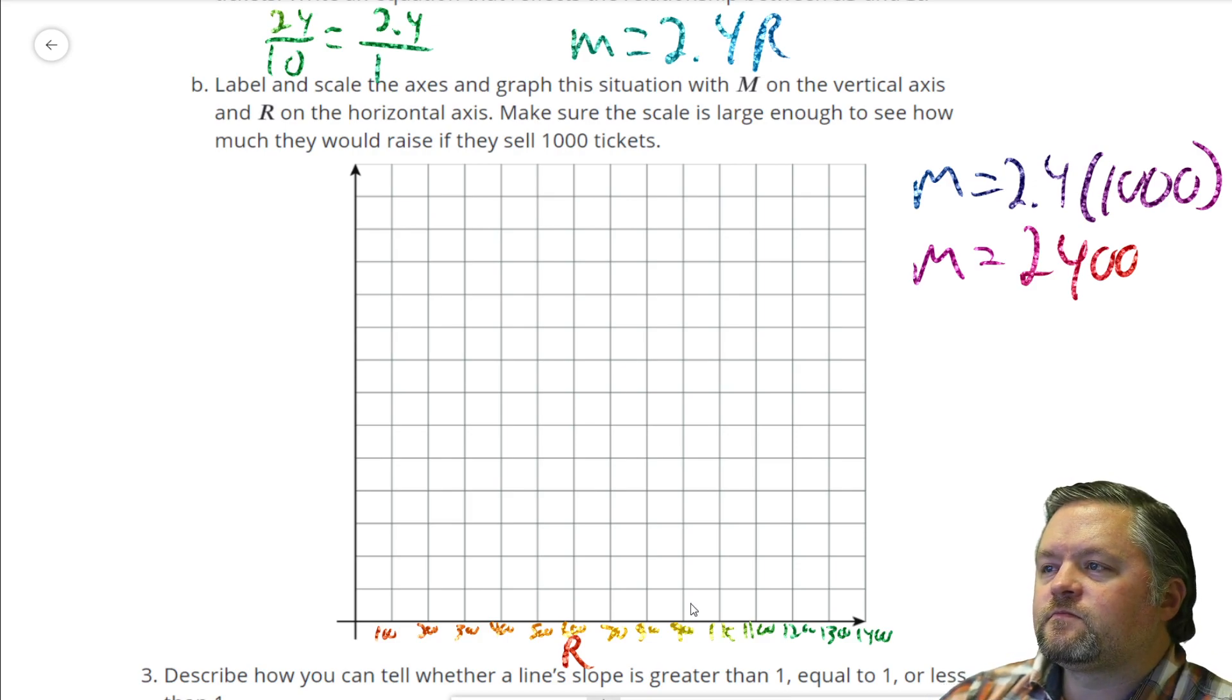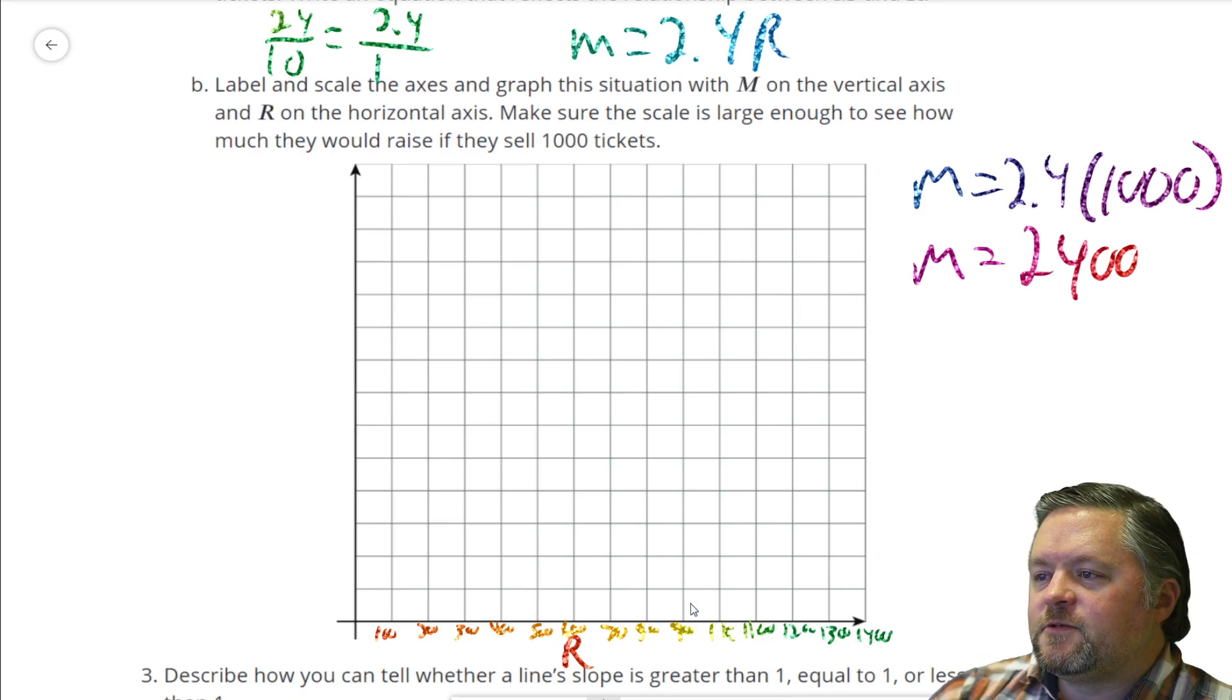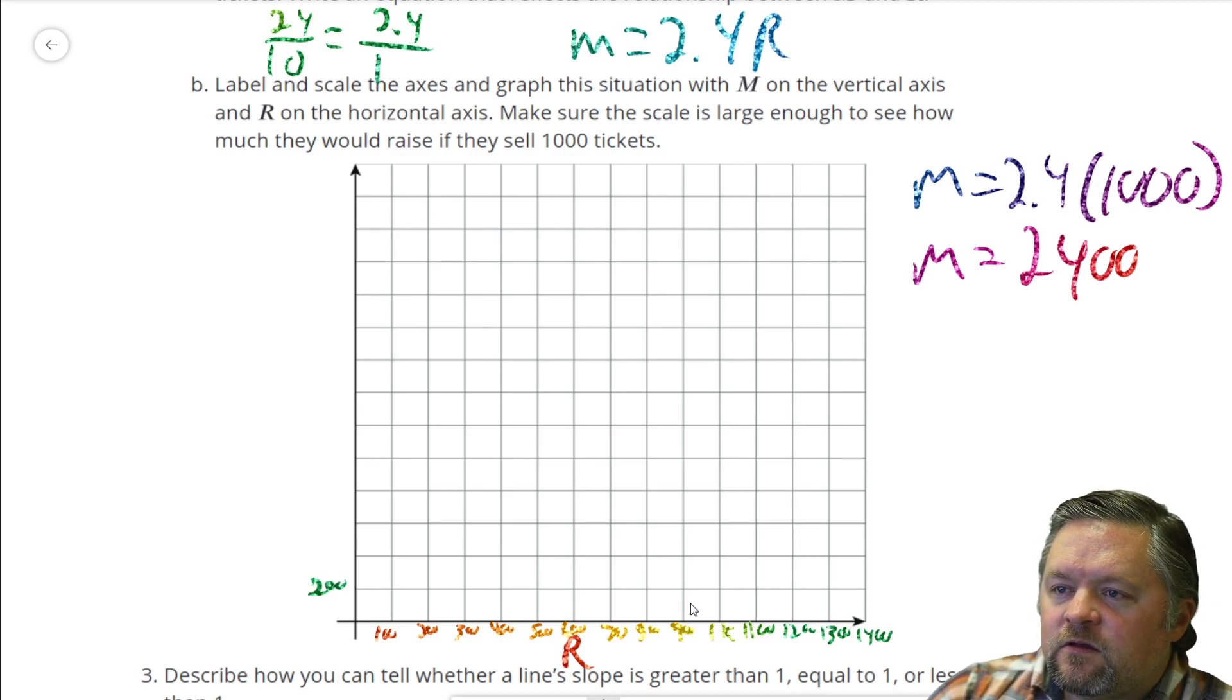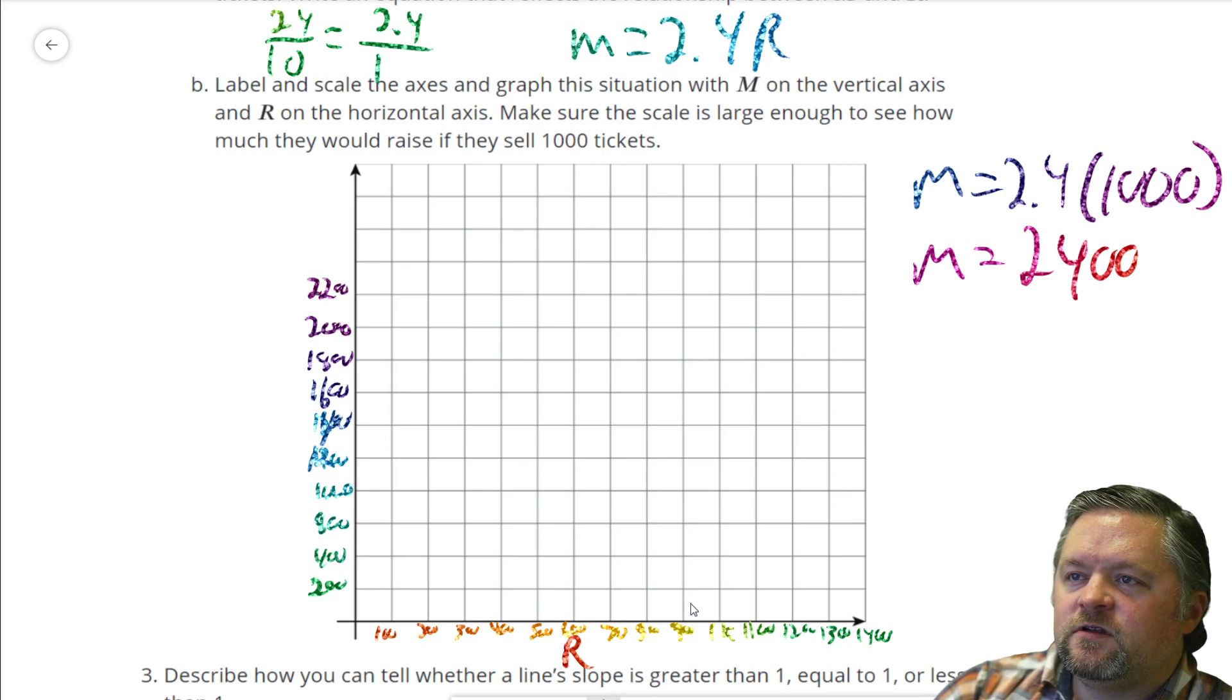Now, going up, we have to get to 2,400. To get up to 2,400, we're going to have to count by more than 100. Because if we count by 100s, we get up to 1,400. But if we count by 200s, we'll get up to double that. So, that would be 2,800, and that's plenty. 200, 400, 800, 1,000, 1,200, 1,400, 1,600, 1,800, 2,000, 2,200, 2,400, 2,600.